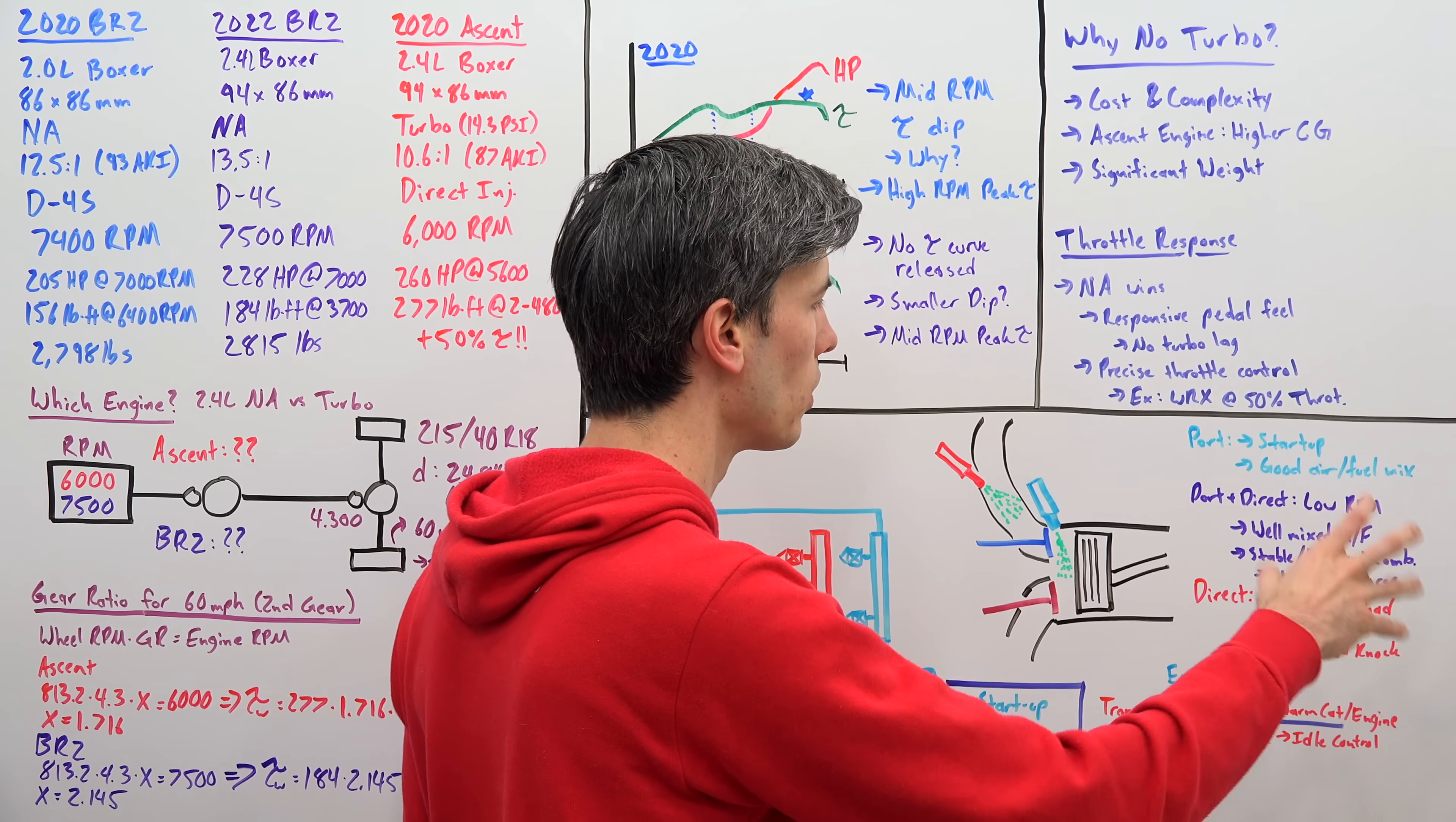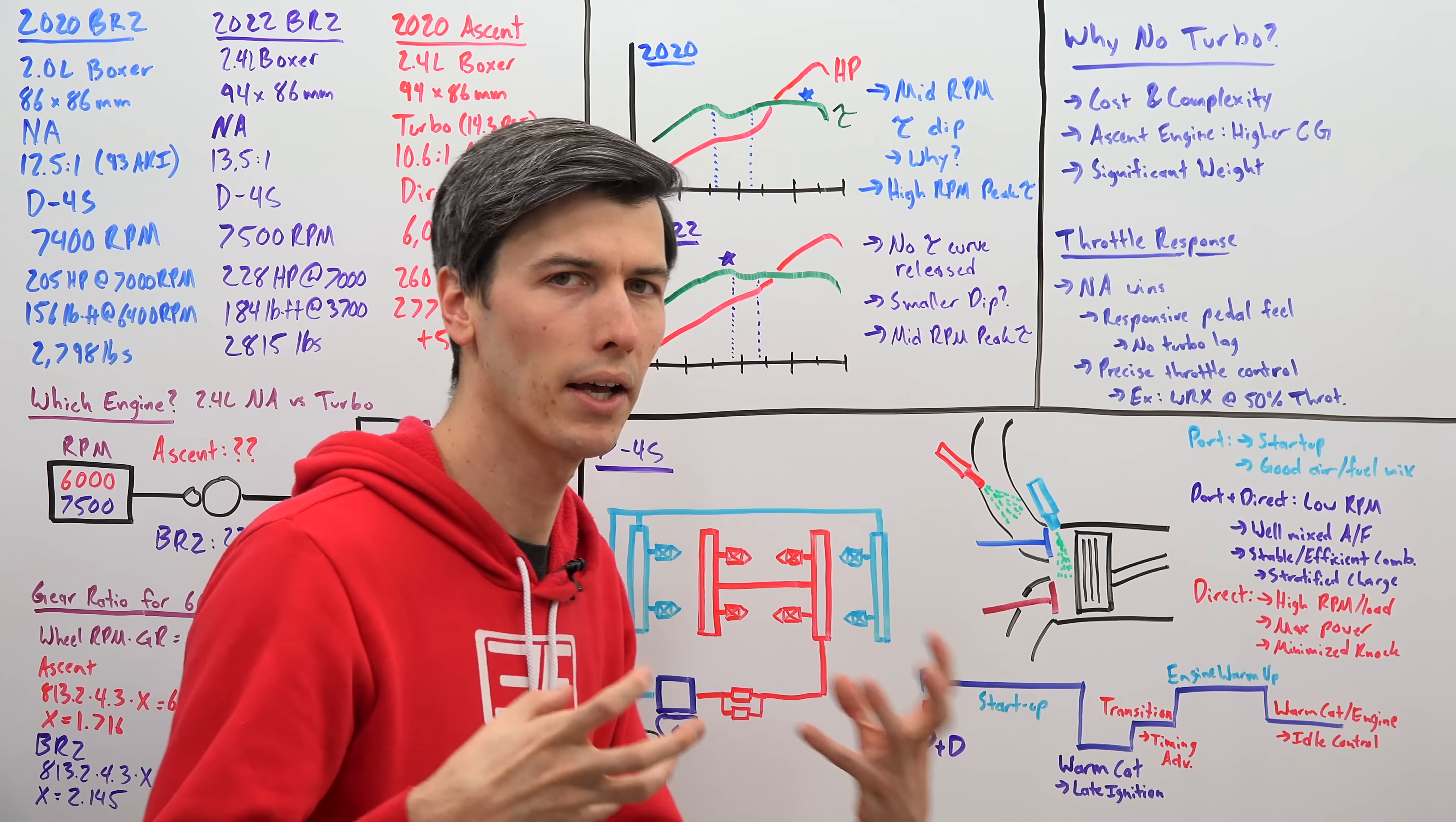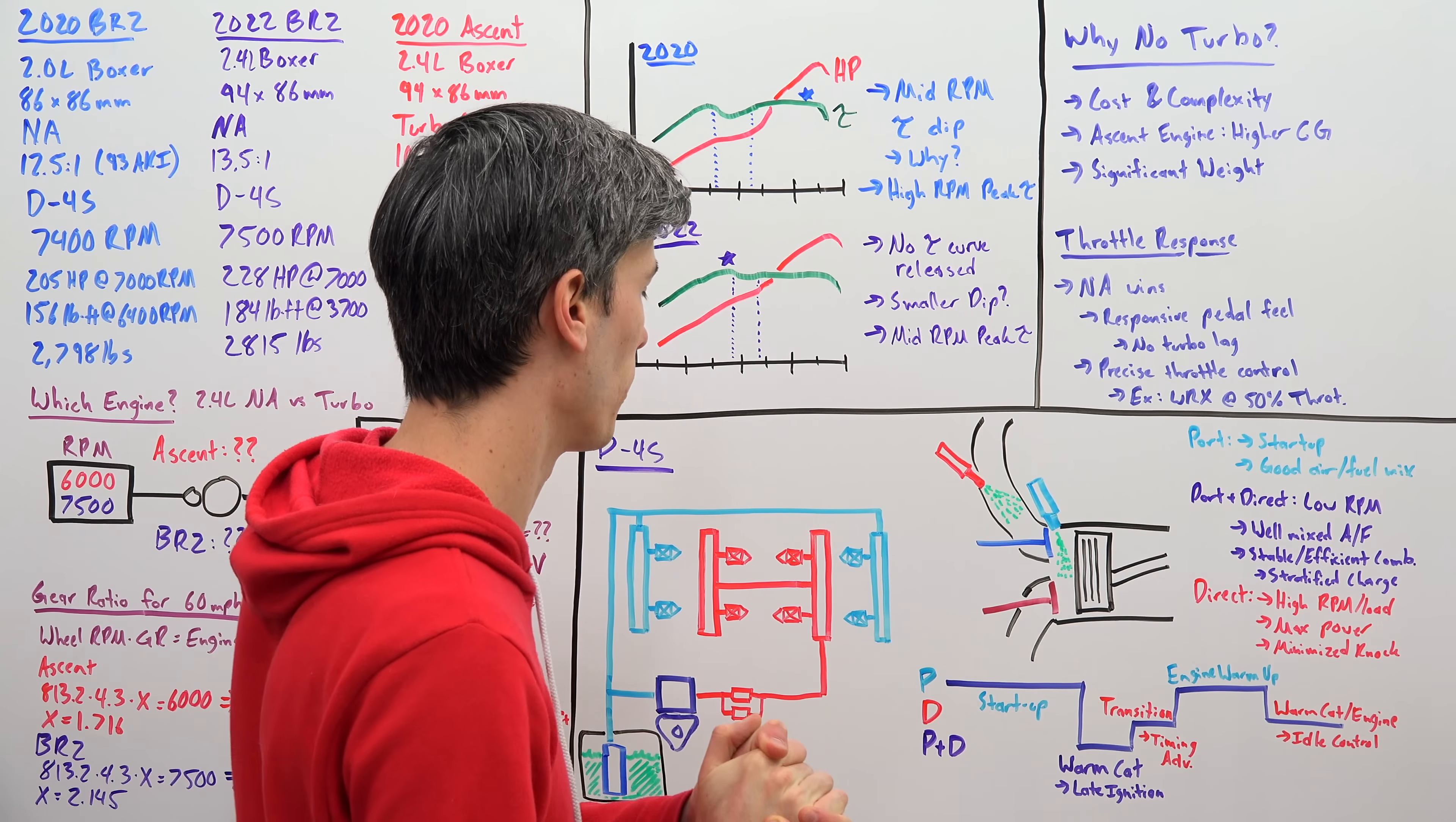Port and direct, this is used at kind of low RPM, low load, well-mixed air fuel ratio, and you're going to have stable and efficient combustion. You can also choose to use a stratified charge where you have a really lean mixture from this port injector for most of the air fuel mixture. And then you have a little rich pocket by that spark plug in the center, and then you're able to combust that lean mixture and get efficient combustion. And then finally, if power is the desire, at high RPM, high load, just using the direct injector for maximum power. And this is because it has a cooling effect within the cylinder, brings those temperatures down, reduces the likelihood for knock, and allows you to make the most power possible by advancing your ignition timing.